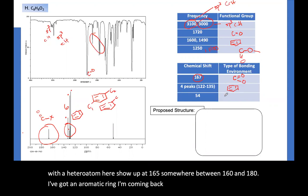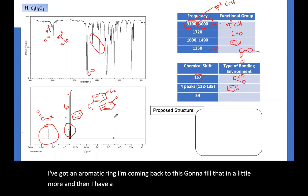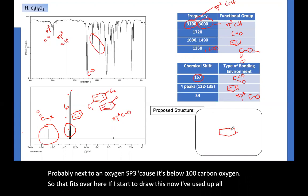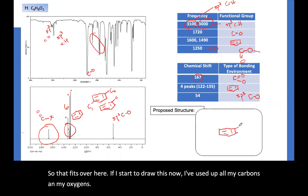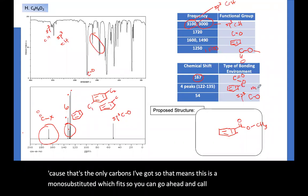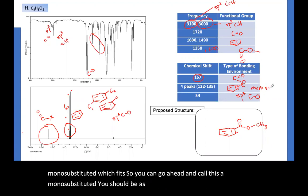So now I've got an aromatic ring. I'm coming back to this. I'm going to fill that in a little more. And then I have a carbon at 54. So this is an SP3 carbon, probably next to an oxygen, SP3 because it's below 100, carbon, oxygen. So that fits over here. If I start to draw this, now I've used up all my carbons and my oxygens. So I've got a carbon, I've got an ester, and I have a methyl next to it because that's the only carbons I've got. So that means this is a mono-substituted, which fits. So you can go ahead and call this a mono-substituted. You should be as clear as you can in these tables for your lab reports.